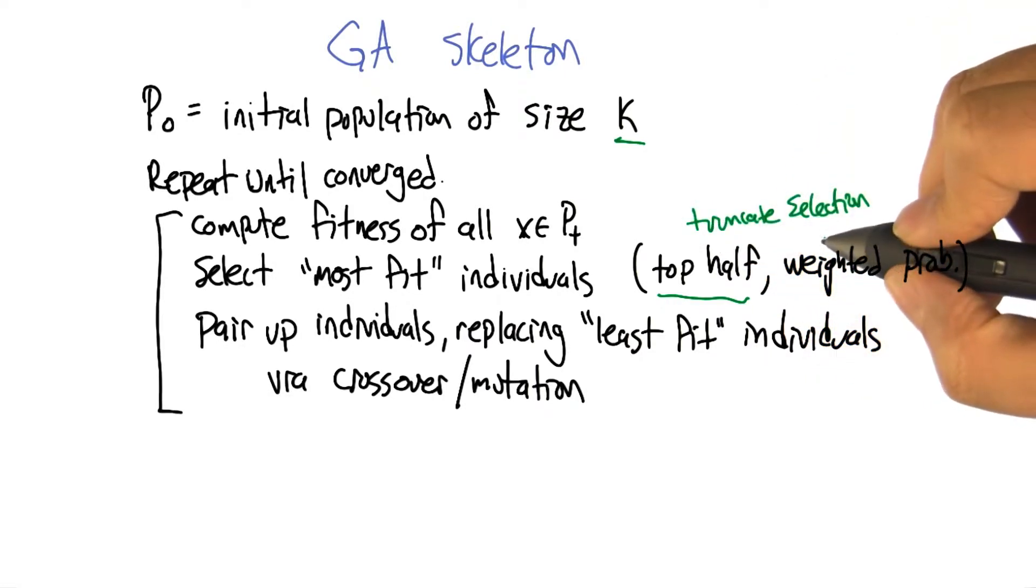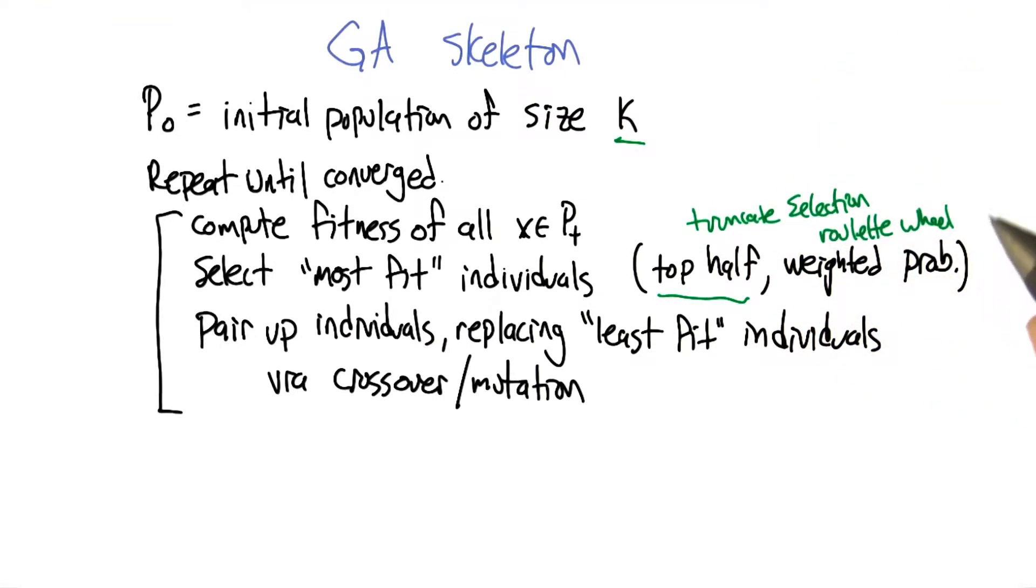But there's also an idea called roulette wheel selection, where what you do is you actually select individuals at random. But you give the higher scoring individuals a higher probability of actually being selected. So we don't just strictly choose the best ones, we choose weighted by who's the best. So does this get us back to exploitation versus exploration then? I think it does.